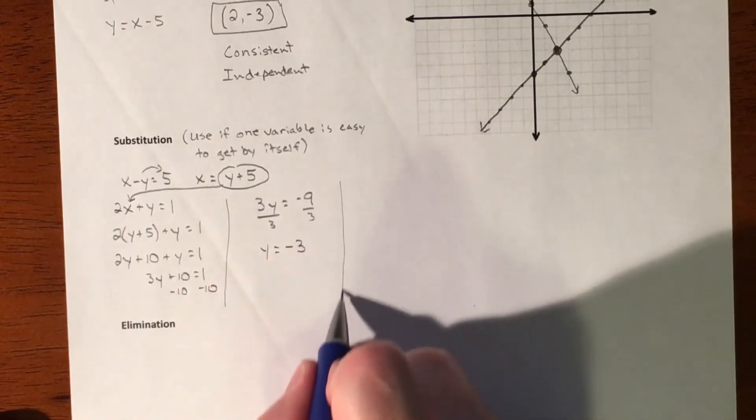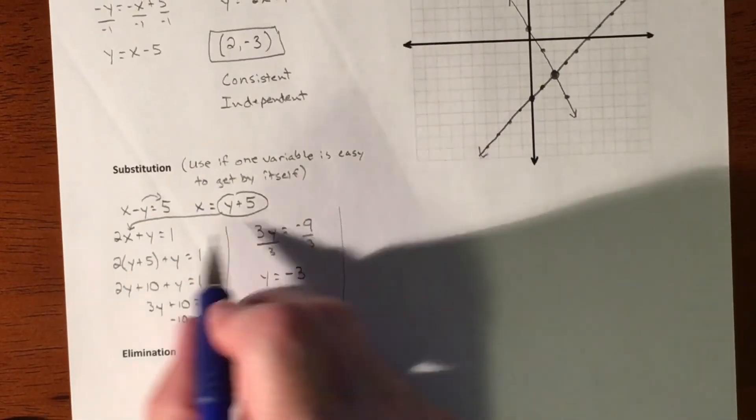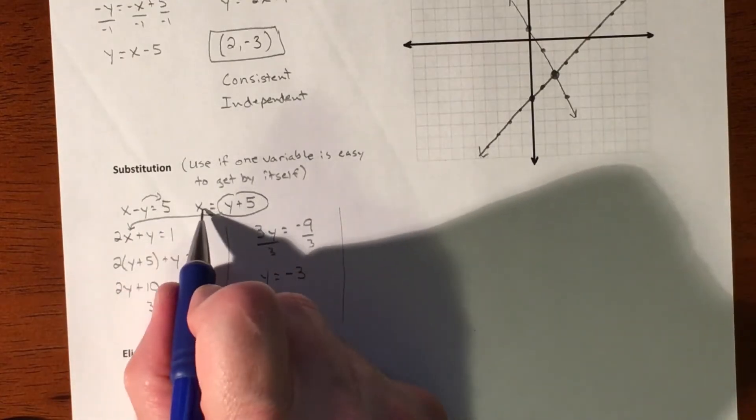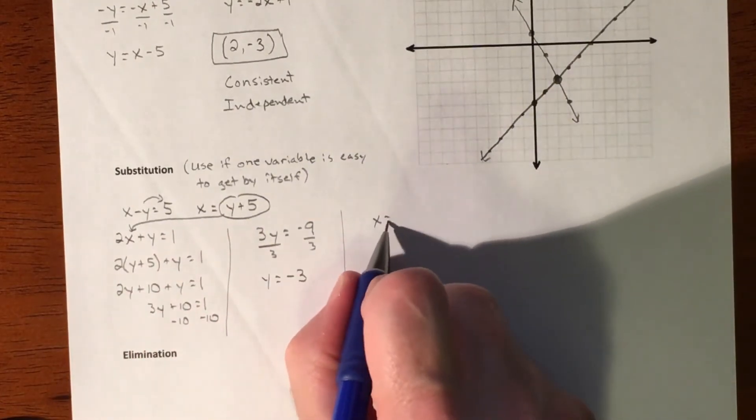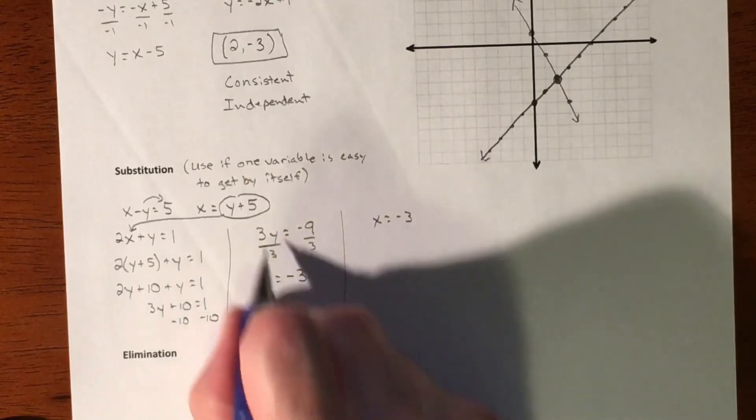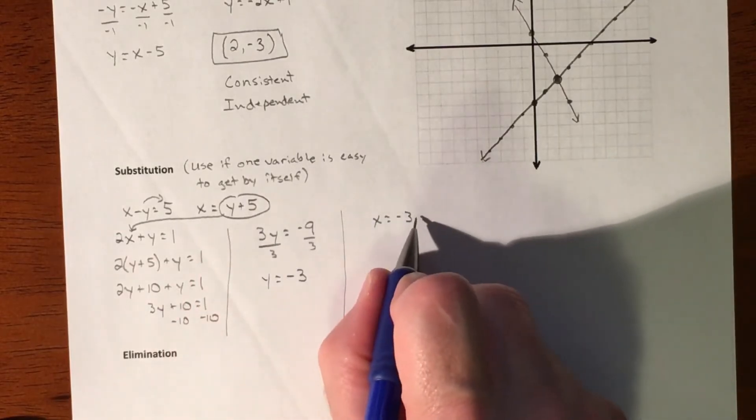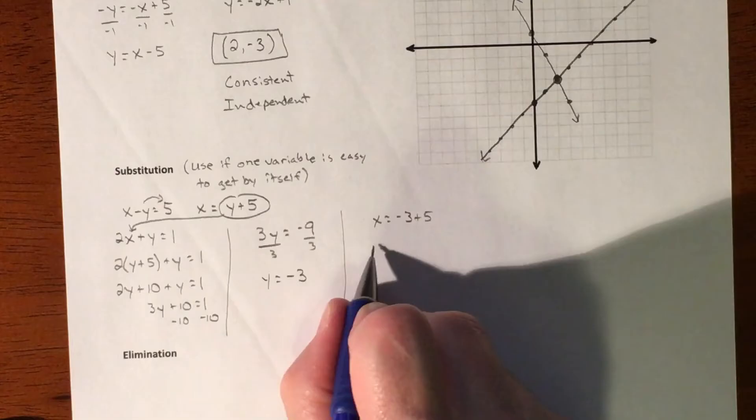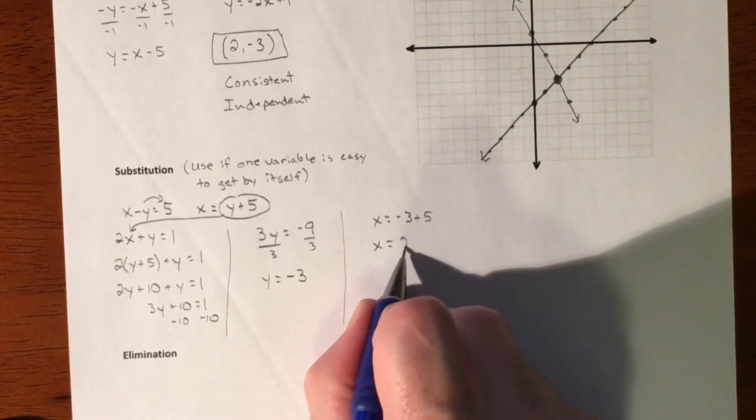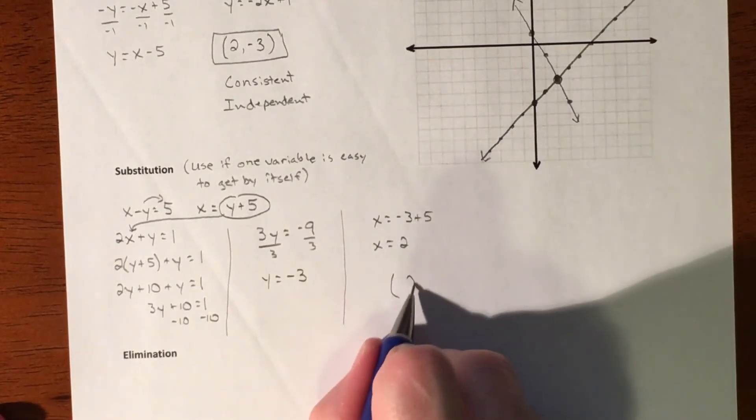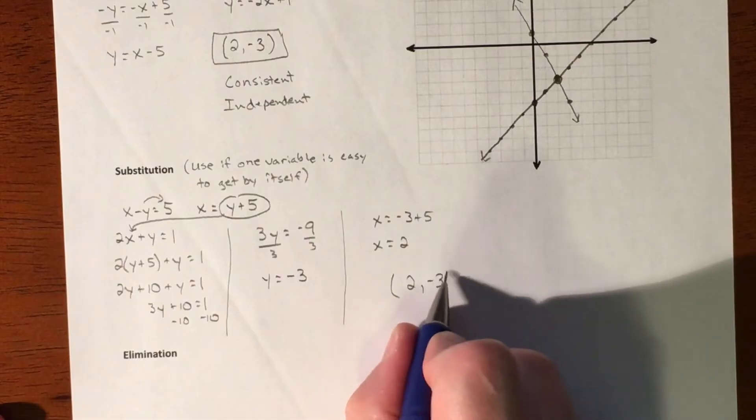And then once we know y, we're going to plug y back into any of these. Maybe this one because that already has x by itself. So we'll put the y in and replace the y with negative 3 plus 5. So our x value is 2. So our solution is 2, negative 3.